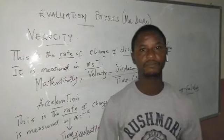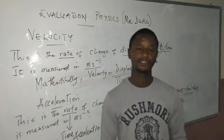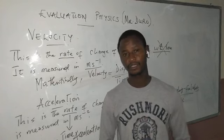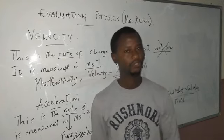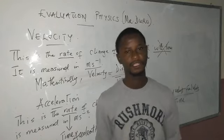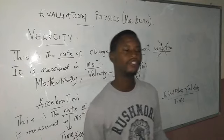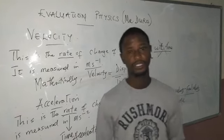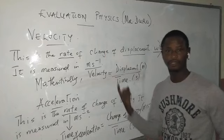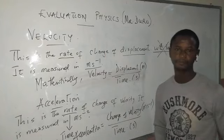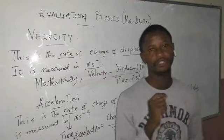Let's round up the class with a simple summary. Velocity is the rate of change of displacement and is completely different from speed, which has to do with distance. Velocity is a vector quantity while speed is a scalar quantity. Acceleration is the rate of change of velocity, its unit is meters per second squared, and I explained how that unit was derived — the same approach as with velocity.